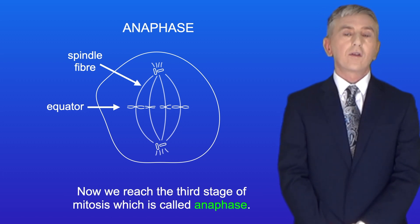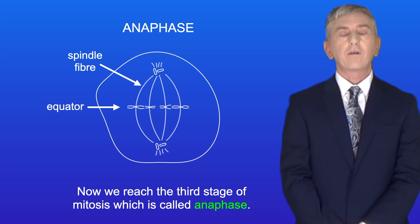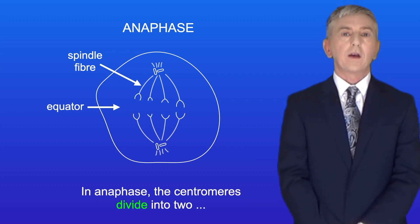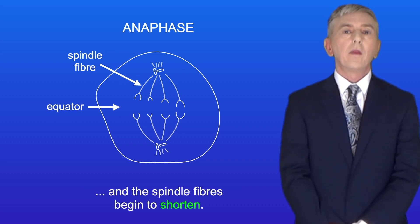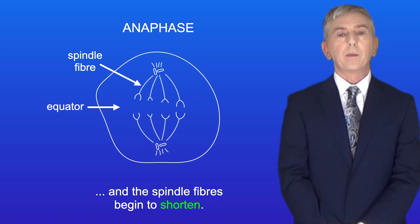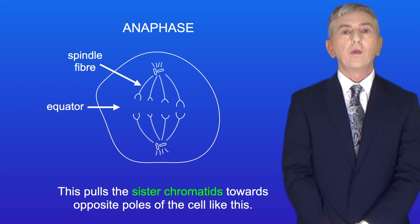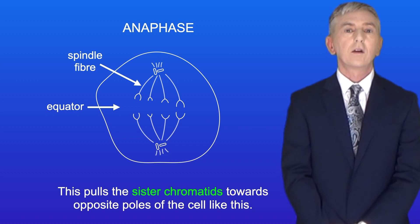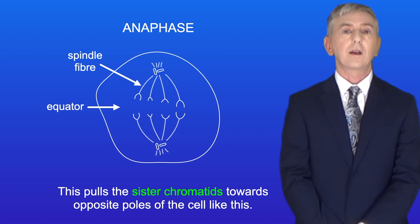The third stage of mitosis is called anaphase. In anaphase, the centromeres divide into two, and the spindle fibers begin to shorten, and this pulls the sister chromatids towards opposite poles of the cell.